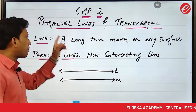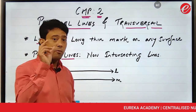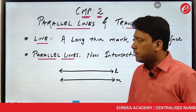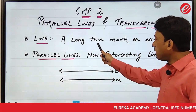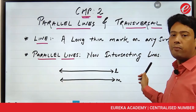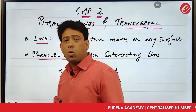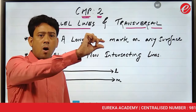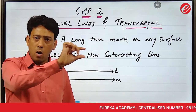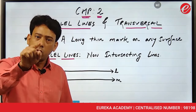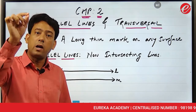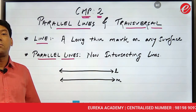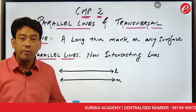First, parallel lines. In parallel lines, the word is 'line'. So what is the meaning of line? Let's see what a line means. A long thin mark on any surface. Make a long thin mark on any surface — that long thin mark is called a line. So what is a line? A long thin mark on any surface.